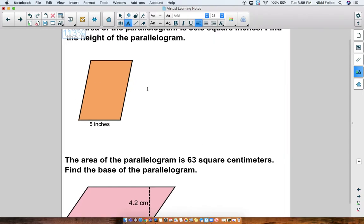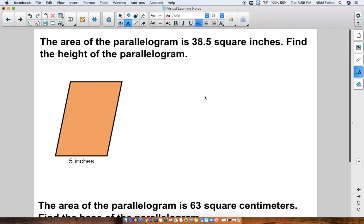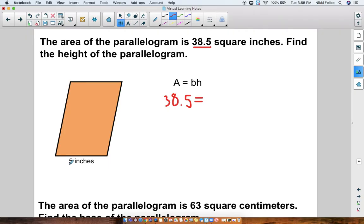Okay. So let's focus on this one first. The area of the parallelogram is 38.5 square inches. I want to find the height. So we know that the area formula is base times height. Let's plug in what we know. The area, we're told the area, it's 38.5. And that equals the base, which we're told is 5 inches.